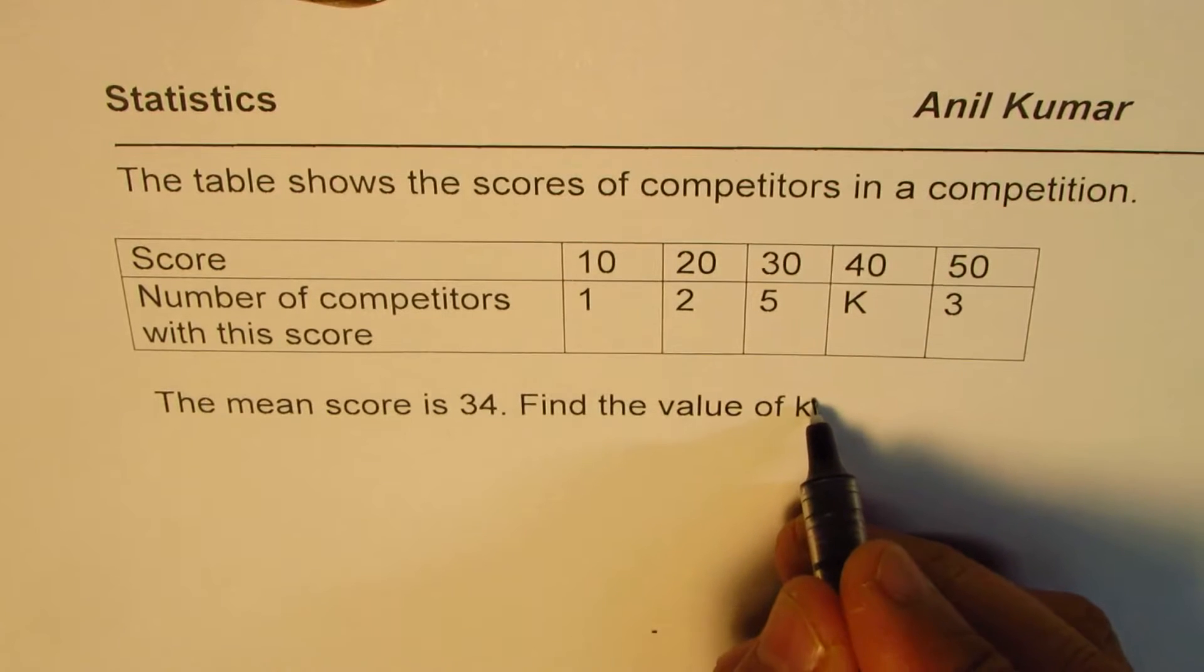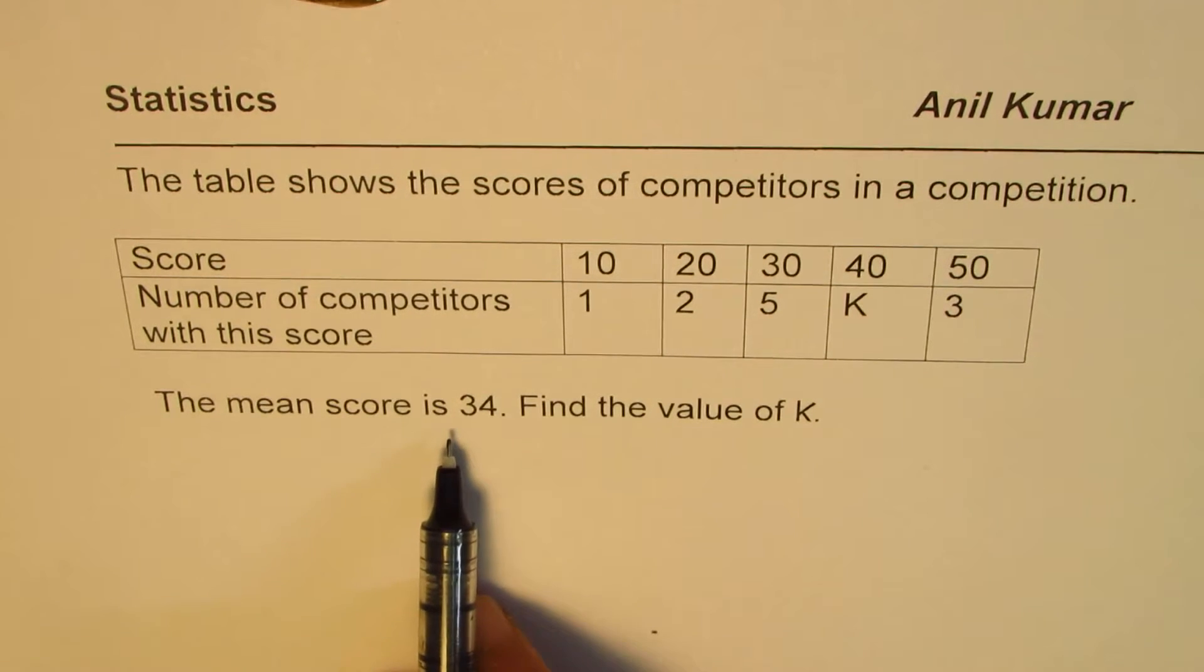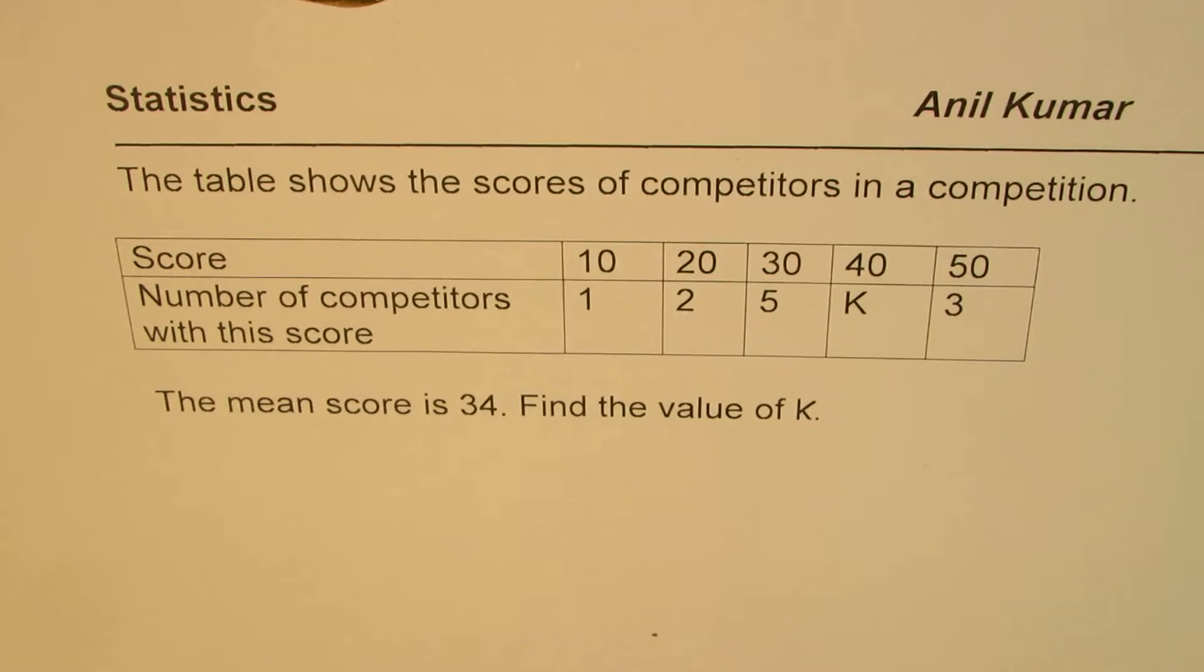So this is capital K since we wrote there capital. Find the value of K. So you are given a frequency table and from here you have to find the unknown value of K when the mean score is given to you as 34. You can pause the video, answer the question, and then look into my suggestions.